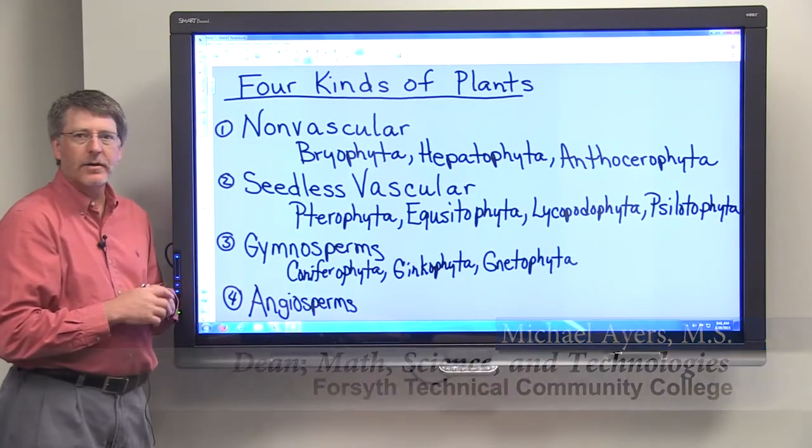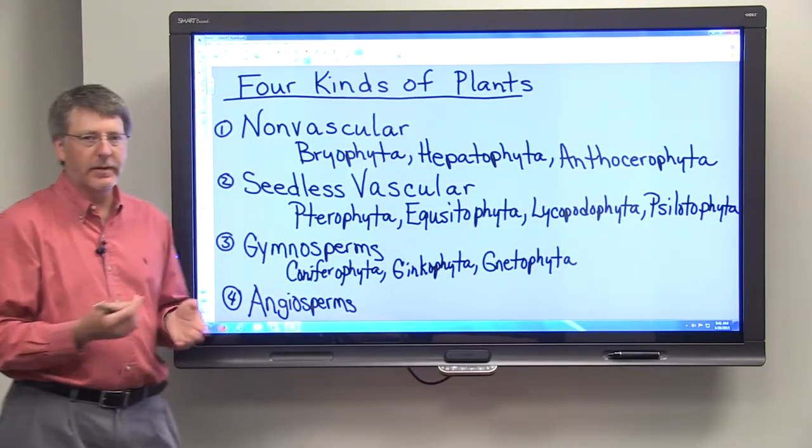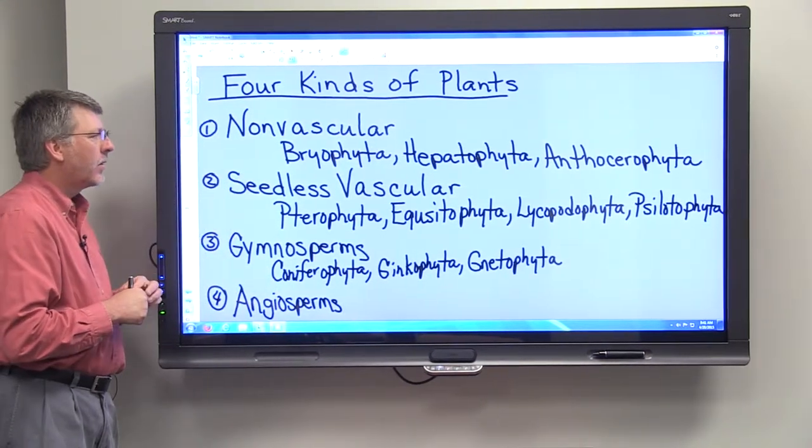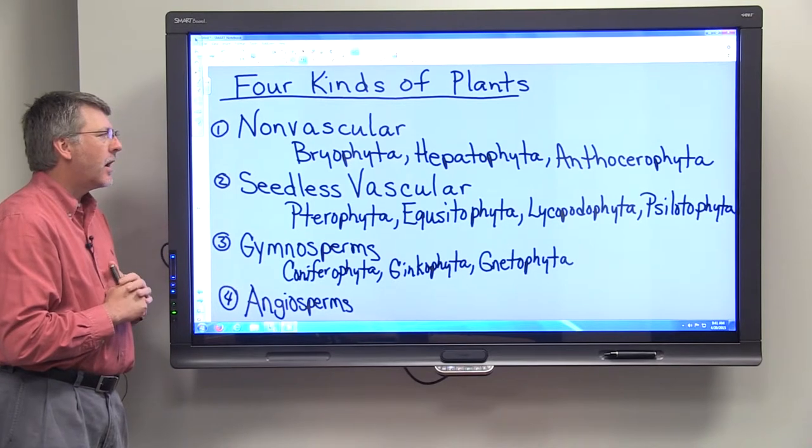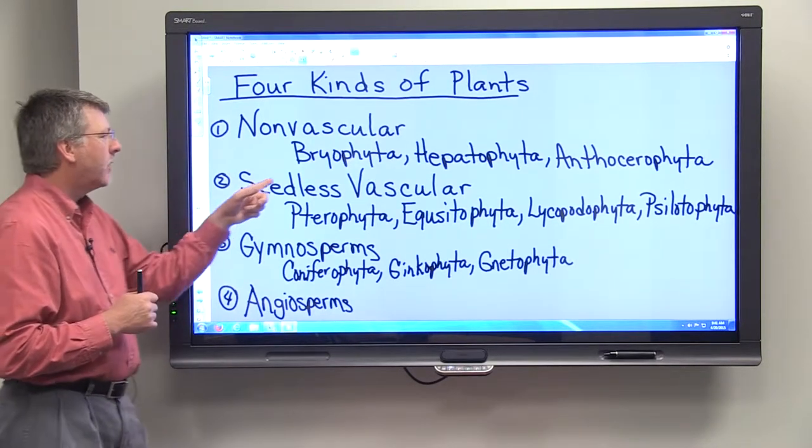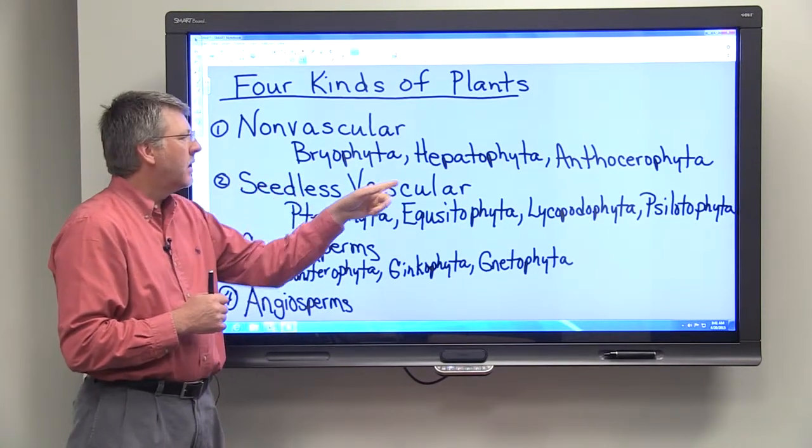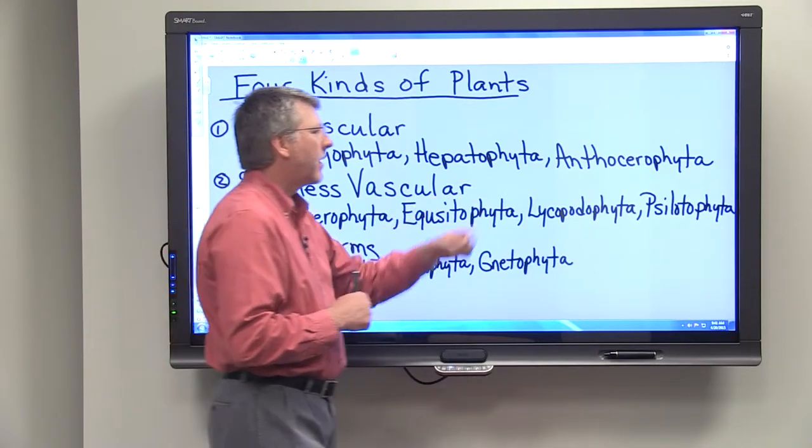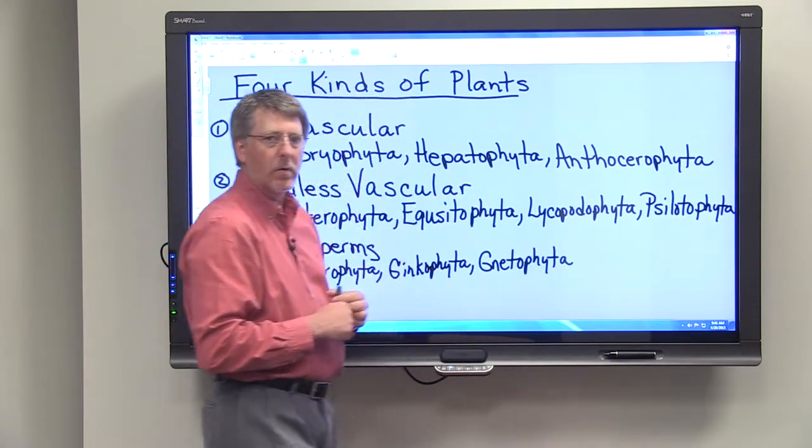There are non-vascular plants, which are just what they sound like, plants that lack vascular tissue. There are three divisions of non-vascular plants: the bryophyta, which are the mosses; the hepatophyta, which are the liverworts; and anthocerophyta, which are hornworts.